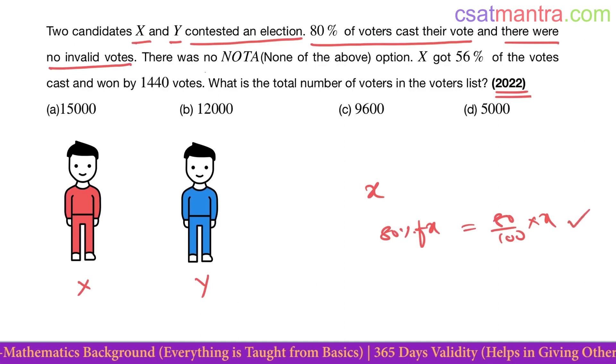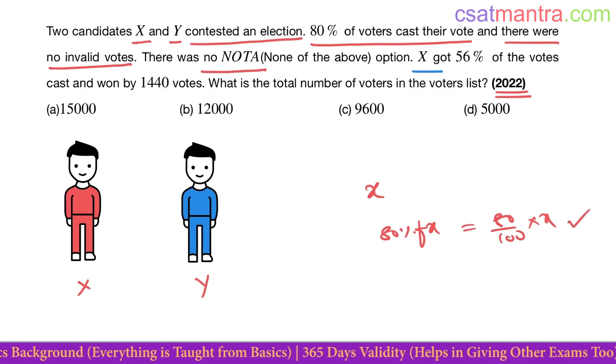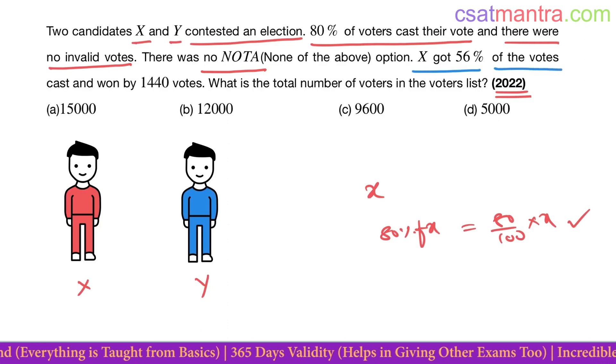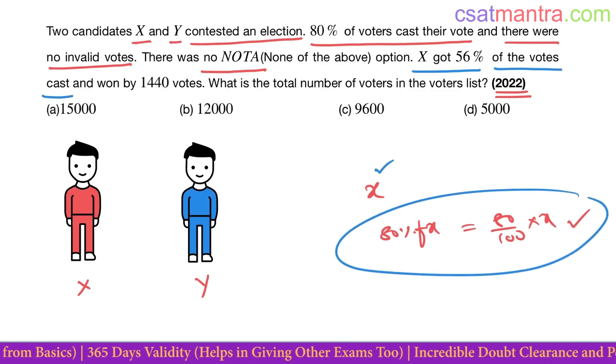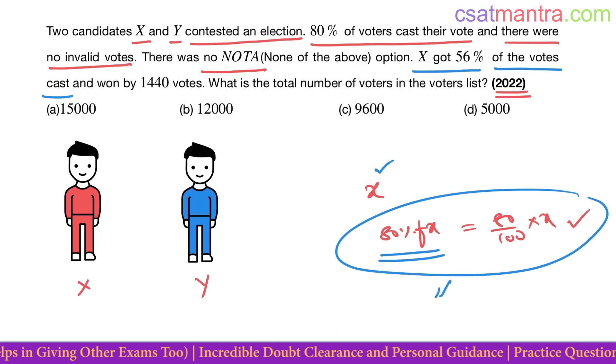There was no NOTA. X got 56 percent of the votes cast. This is our new value now. X number of voters, out of them 80 percent cast their vote. Now out of these 80 percent, this is the new value. You can consider this as the 100 percent.